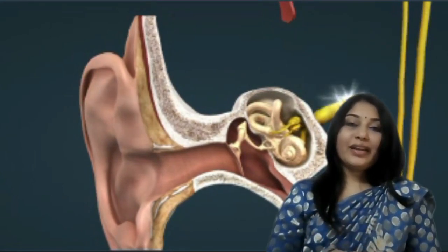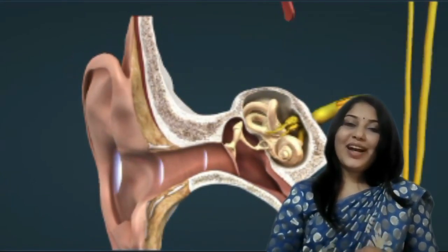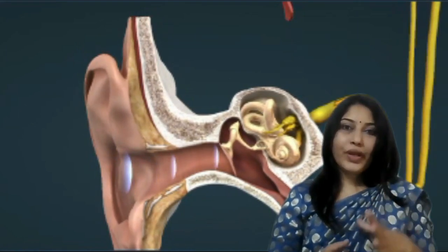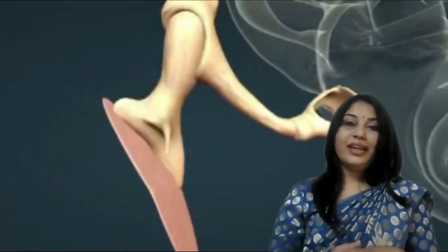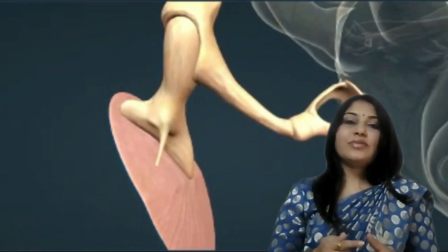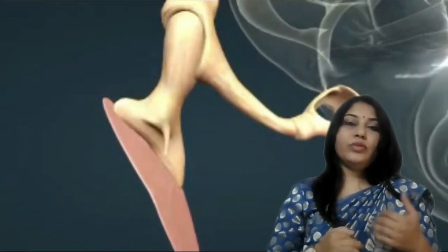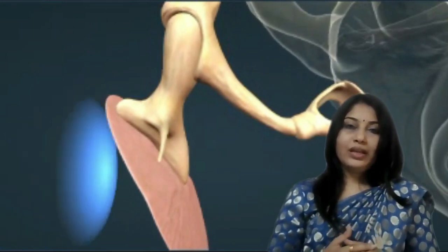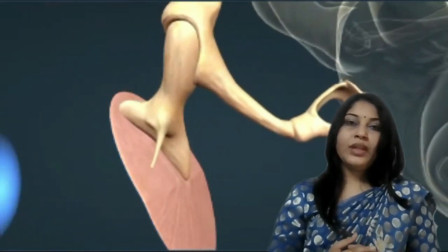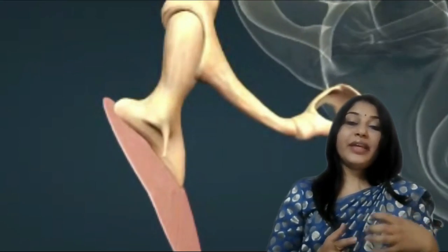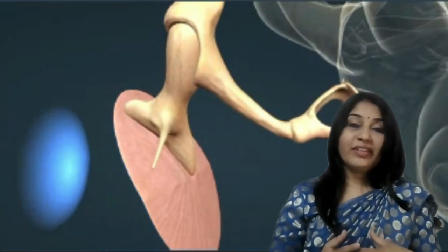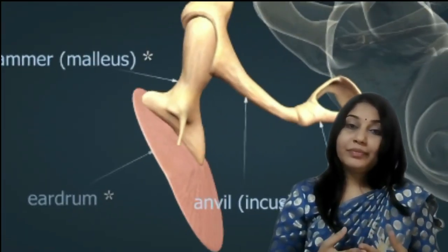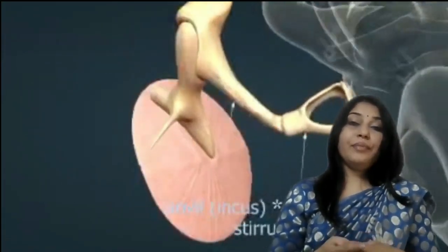Now, in the middle ear, when sound waves or sound vibrations start vibrating on the eardrum, the eardrum will vibrate. When the eardrum starts vibrating, there are three bones called the hammer, anvil, and stirrup. When the sound waves start vibrating on the eardrum, the hammer, anvil, and stirrup also vibrate.